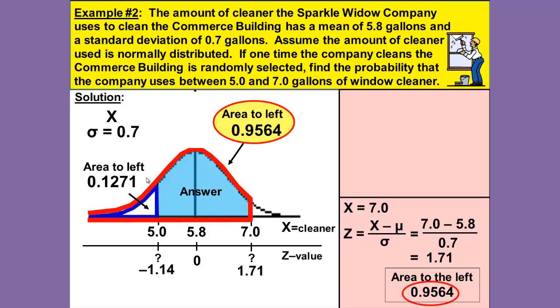Notice our answer is shaded in light blue, but the highlighted areas are neither of the answers from our table. What we need to do is take the area highlighted in red and subtract out the area highlighted in blue. To find between, we subtract table minus table.